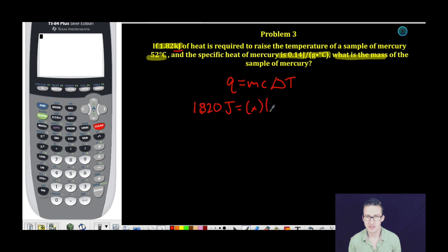This time I'm looking for the mass. The specific heat is 0.14 joules per gram degree Celsius, and the temperature change is 52 degrees Celsius. A quick jump to my calculator and some algebra skills will help me solve this.